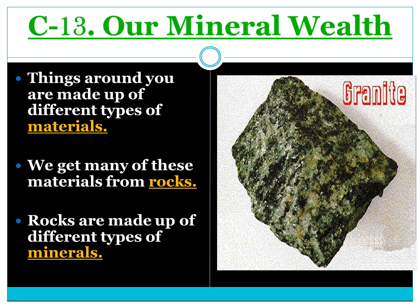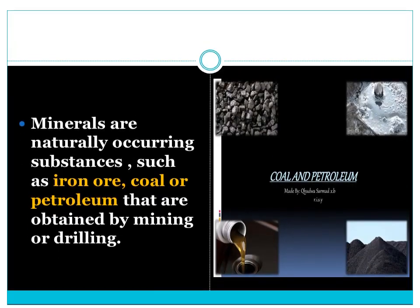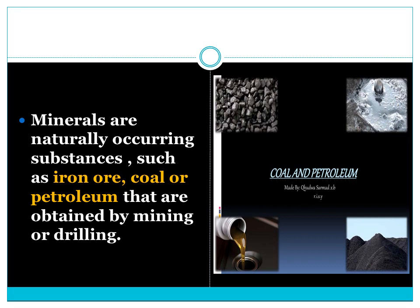Rocks are made up of different types of minerals. In the picture, the rock I have shown is granite — a type of rock made up of different minerals. Minerals are naturally occurring substances such as iron ore, coal, or petroleum that are obtained by mining or drilling. Ore means the raw form of a mineral.